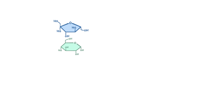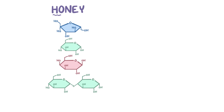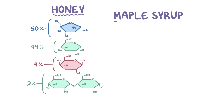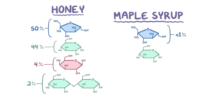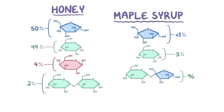Sugars like fructose are most always found in combination with other sugars, and the combinations can be pretty different even in seemingly similar foods. For example, in honey, 50% of the sugar is fructose, 44% is glucose, 4% is galactose, and 2% is maltose, whereas in maple syrup less than 1% is fructose, 3% is glucose, and 96% is sucrose. So simple sugars, whether natural or added, are mixtures of monosaccharides or disaccharides.